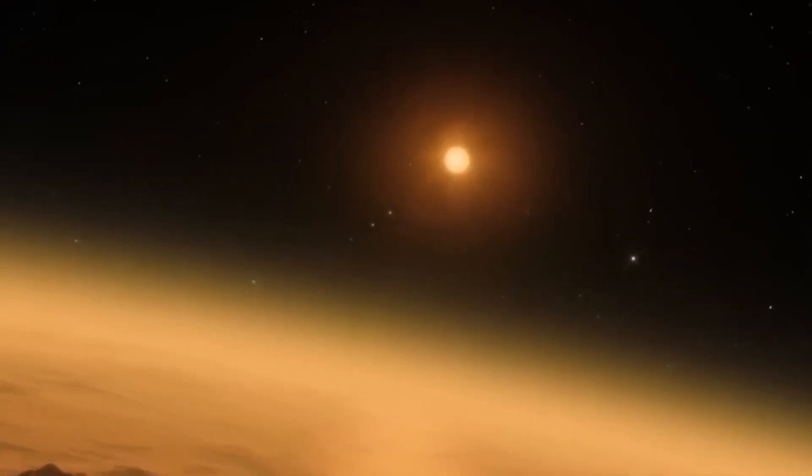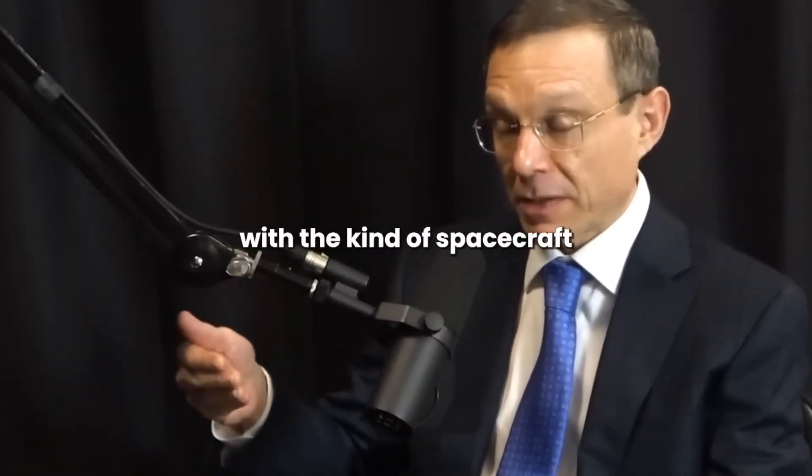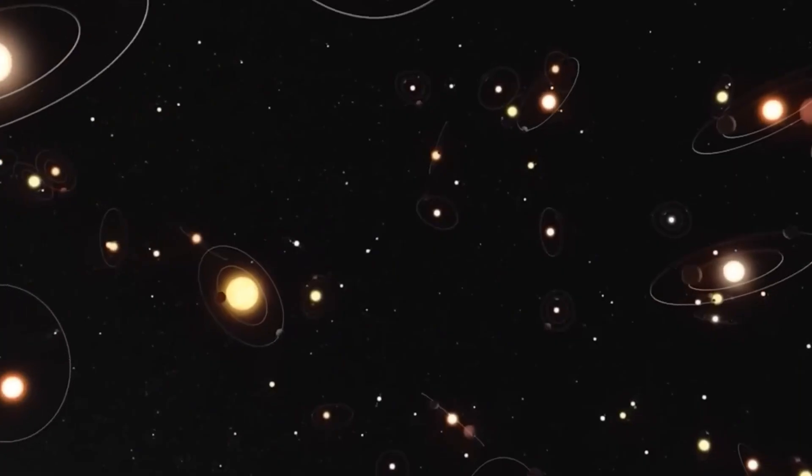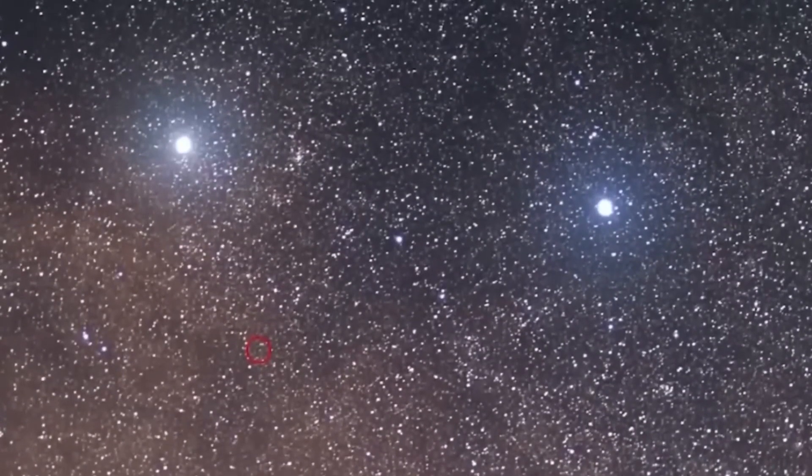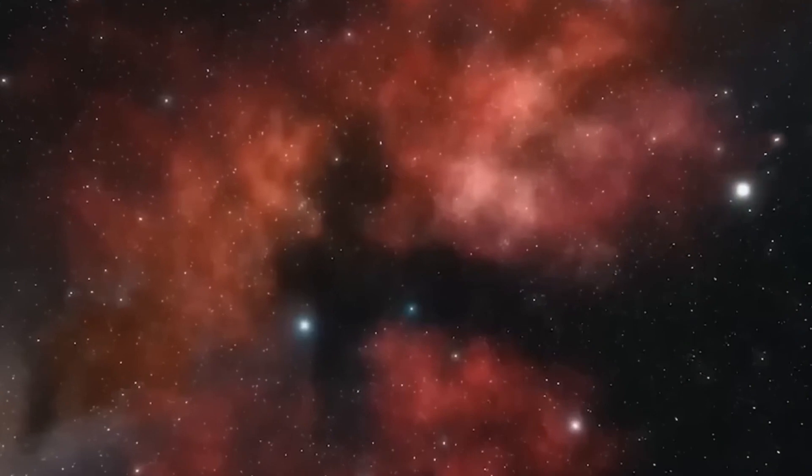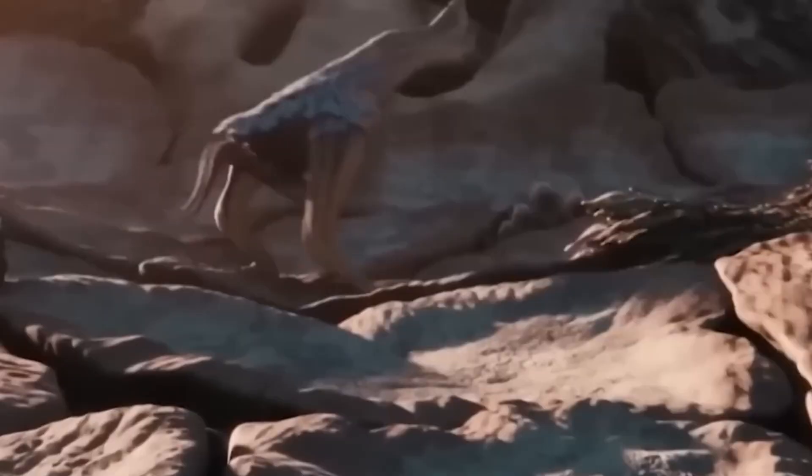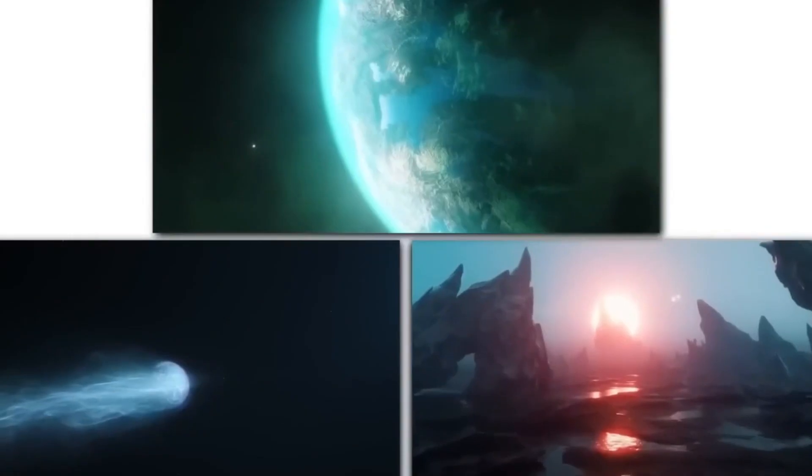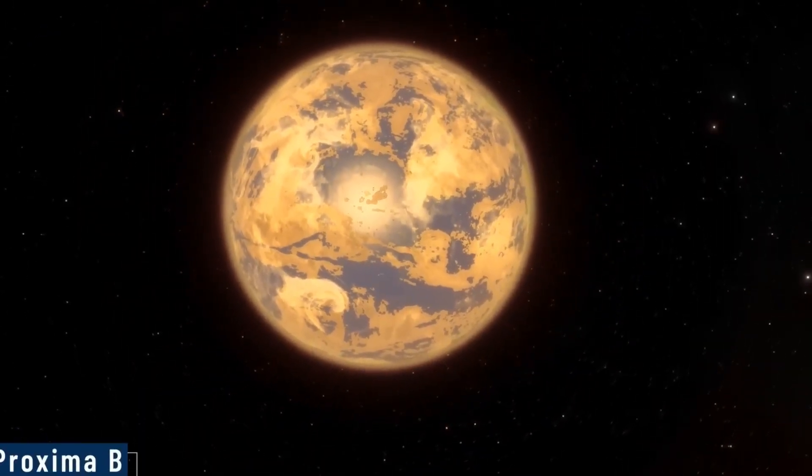This remarkable image showcased an astonishing 50,000 sources emitting infrared light. It unveiled the true essence of Pandora's Cluster, located around 3.5 billion light-years away. Embedded within this captivating image was a brilliant foreground star from our own Milky Way. The star exhibited unique diffraction spikes, a mesmerizing pattern created by the James Webb Telescope itself.